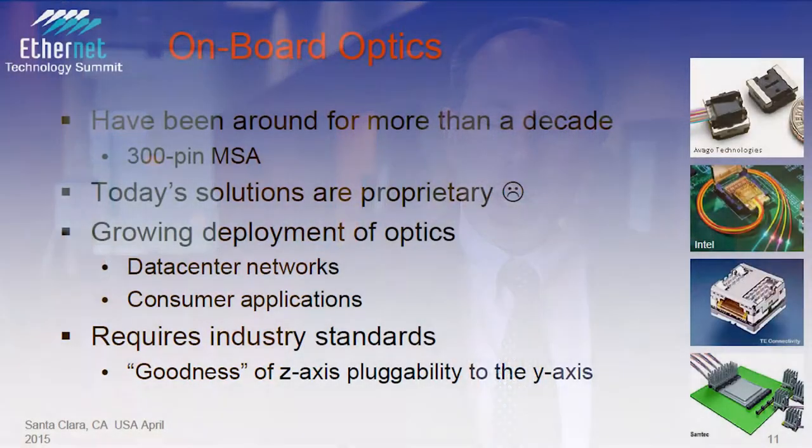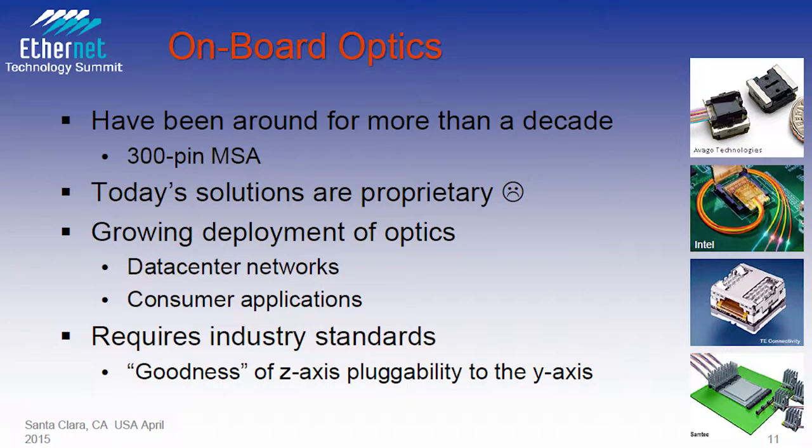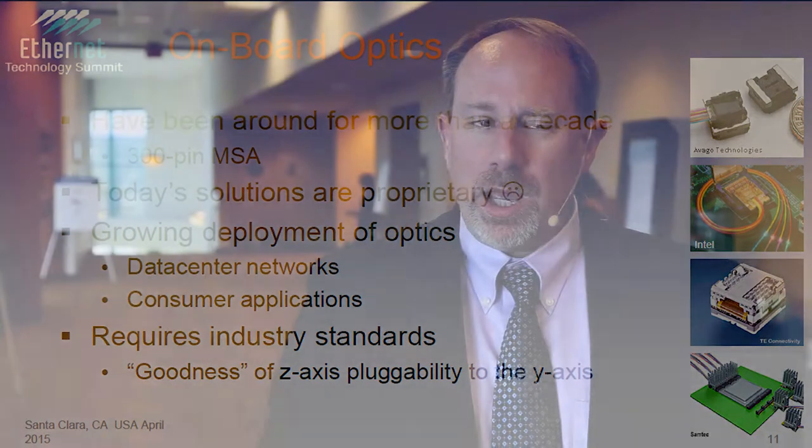Kobo is a big push that we've decided to make in the industry — figuring out a way, as we progress with greater and greater bandwidth in optics, how do we get these closer to the switch silicon? How do we improve airflow on these switches and improve the thermal environment?